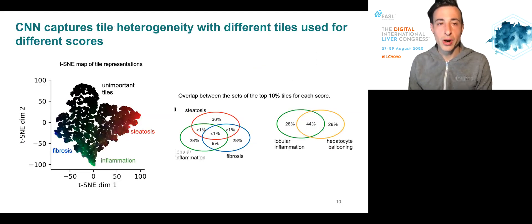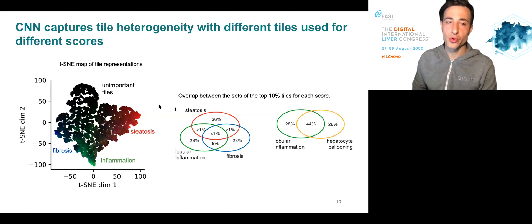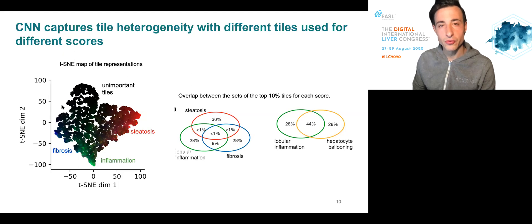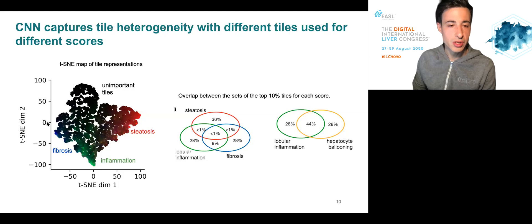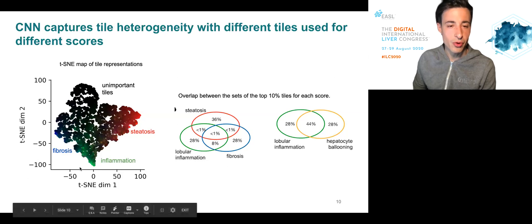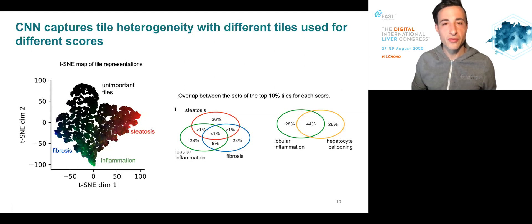The convolutional neural networks also capture tile heterogeneity, with different tiles used for different scores. Here we show a t-SNE map of tile representations, where each point is a tile. A large fraction of the tiles are deemed unimportant by the models, meaning they were not used for scoring any of the processes. You can also see that the tiles used for scoring fibrosis, inflammation, and steatosis live in different regions of this manifold.